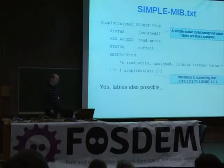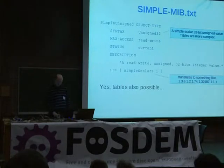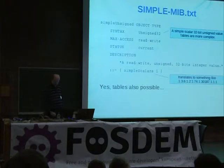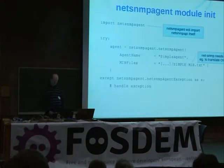This is a quite simple example — just an integer value which we want to make available. You can also do tables, but that's way more complex. I support it, of course. If you have an MIB like this, this is merely a declaration — you're just constructing a tree of information. You don't have the code yet, and that's the intent of using my Python SNMP agent module.